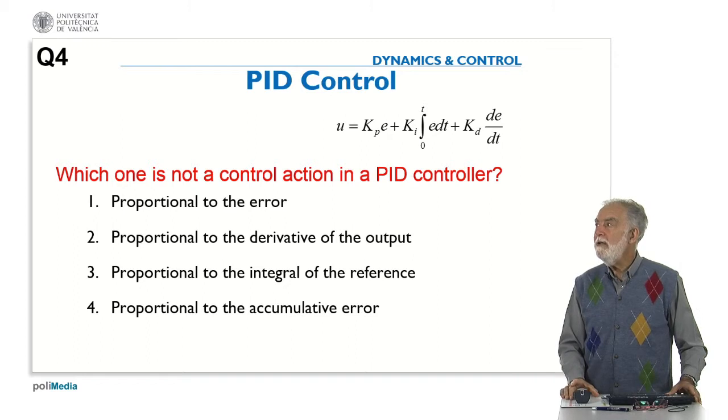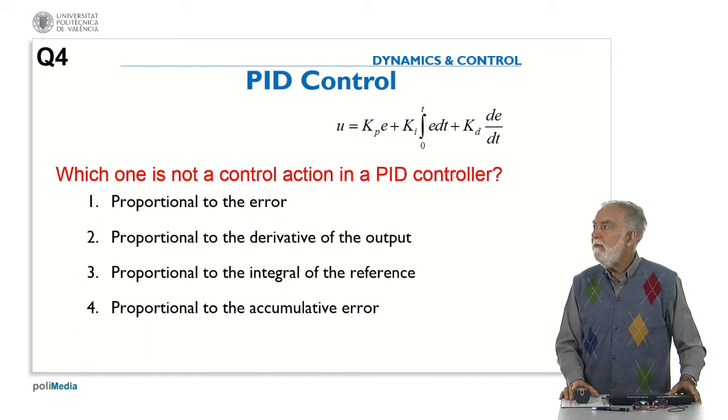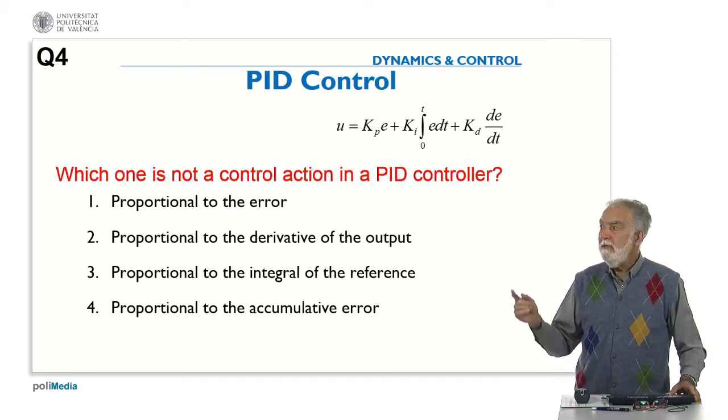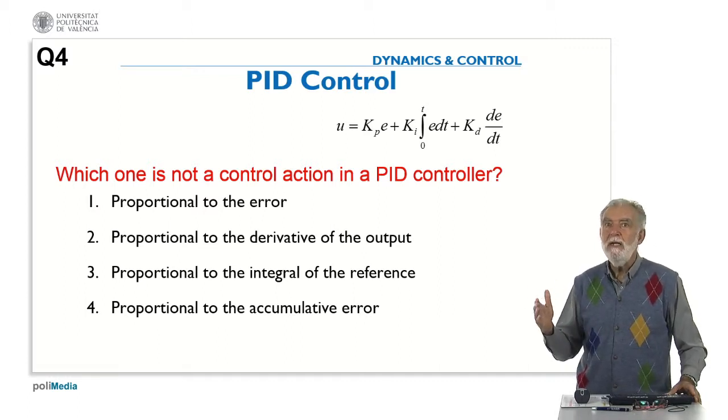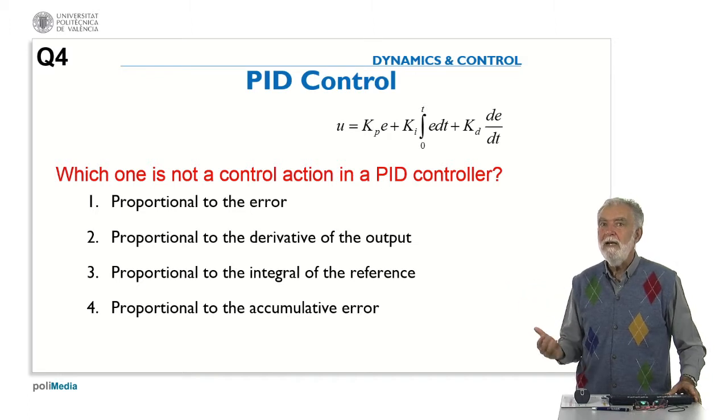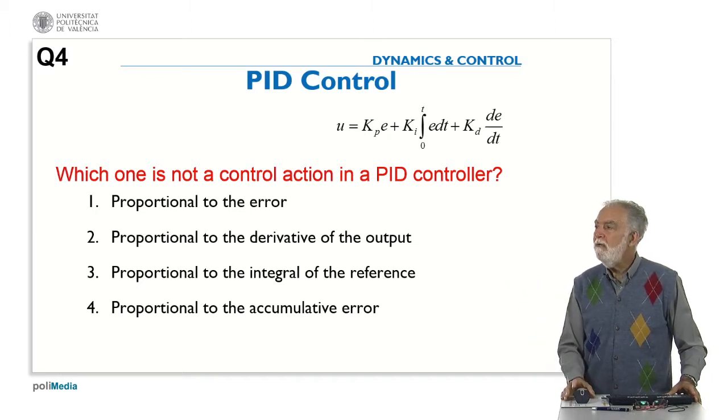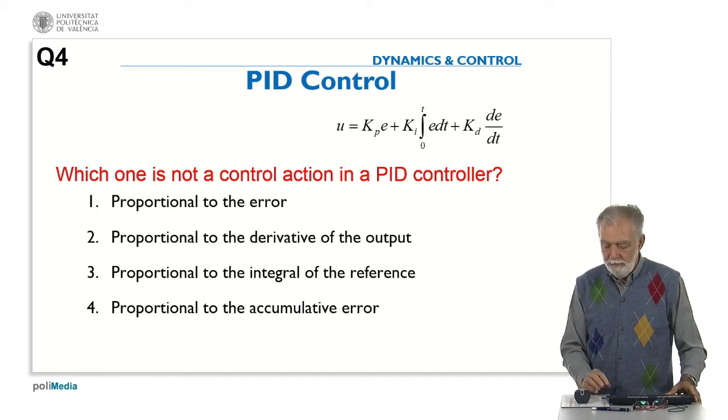So a control action is proportional to the derivative of the output. It's proportional to the accumulative error. Yes, accumulative is another way to say the integral, the past values of the error. So the proposal 4 is also true.